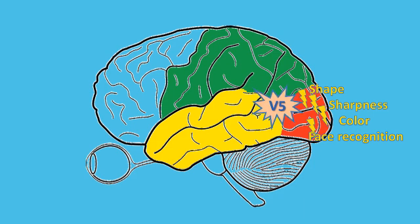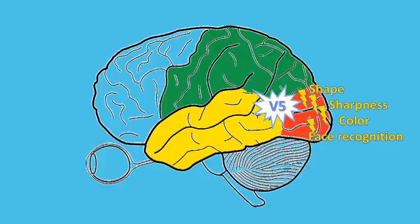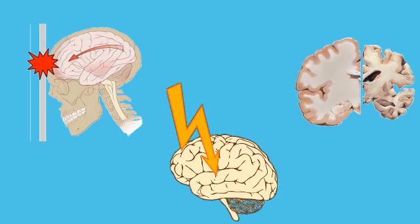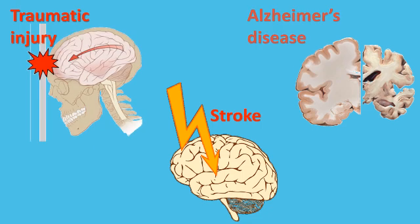In akinetopsia, the V5 region — whose principal function is to detect and signal the presence and direction of visual motion — is injured. Therefore, patients who suffer with this disorder perceive the smooth movements of objects as discontinuous freeze-frame images. The disease affecting the ability to detect motion can result from a stroke, traumatic brain injury, Alzheimer's disease, and other brain lesions that specifically affect the V5 region.